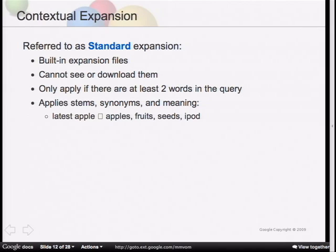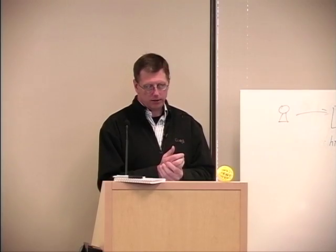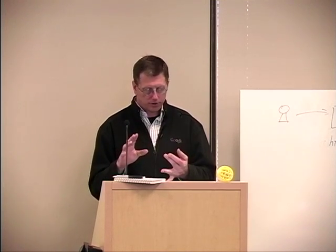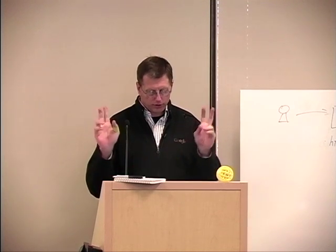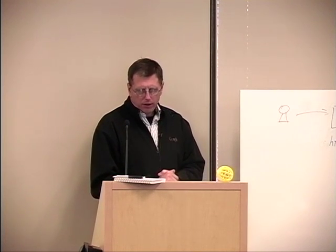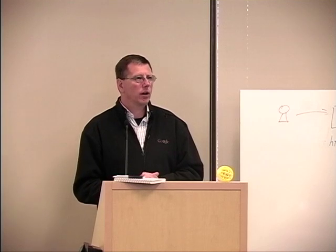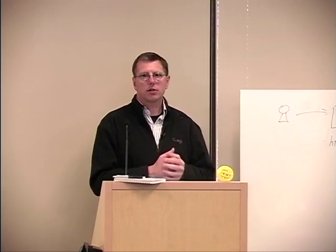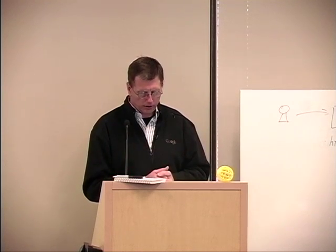The contextual type is referred to as 'standard expansion' in the search appliance. When you select standard, you're saying you want contextual search running. You can turn it off if you don't want it. If you're getting unpredictable results, you can go ahead and turn it off. There must be at least two words in the query, because we take one word and compare it to the context of the other nearby words.